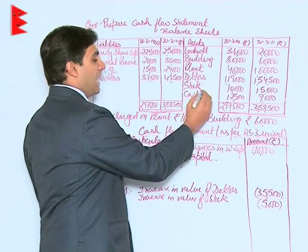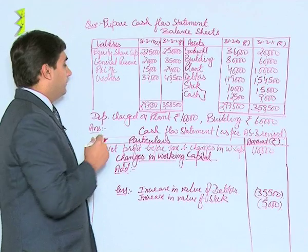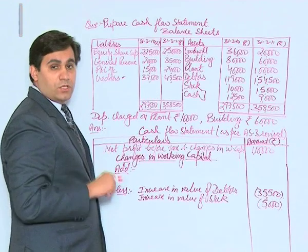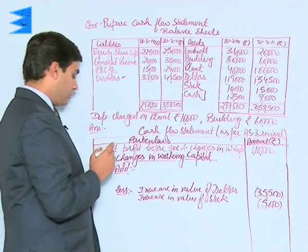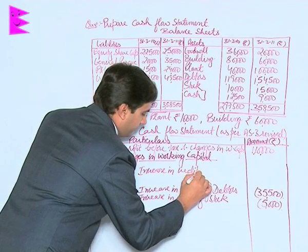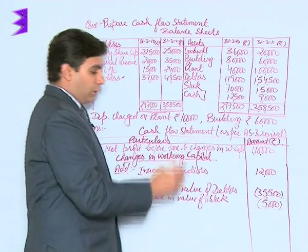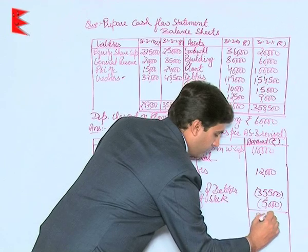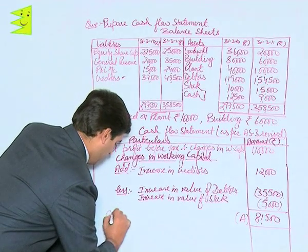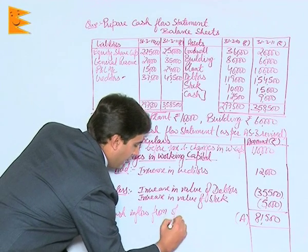Cash is actually a cash equivalent, hence it would not be shown here. Coming to the liability side, we only have one current liability — creditors — and the value of creditors is increasing. Whenever there is an increase in the value of a current liability, it has to be added. Increase in creditors is 12,000 rupees. Totaling them out, we get 81,500 as the answer. This represents cash inflow from operating activities.